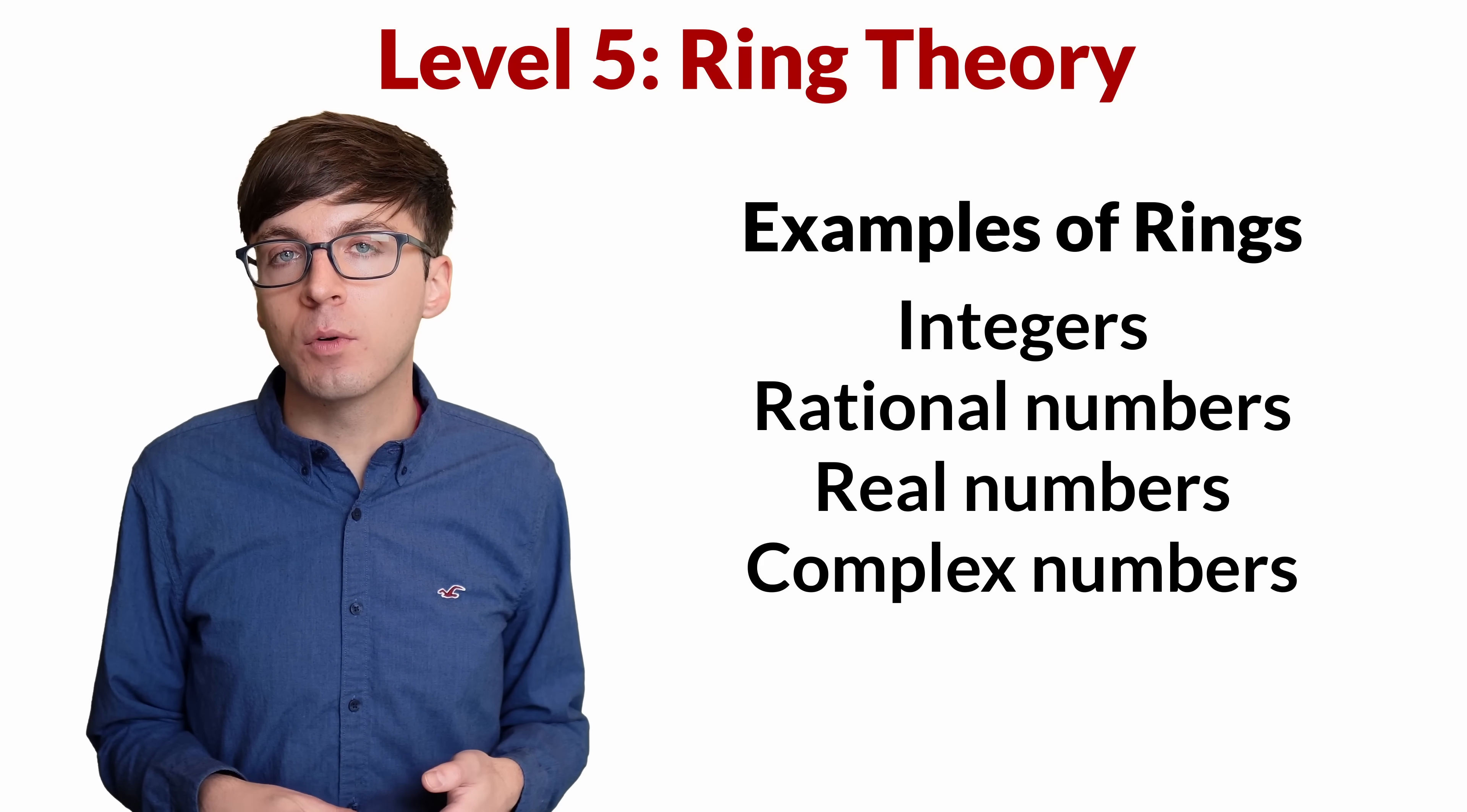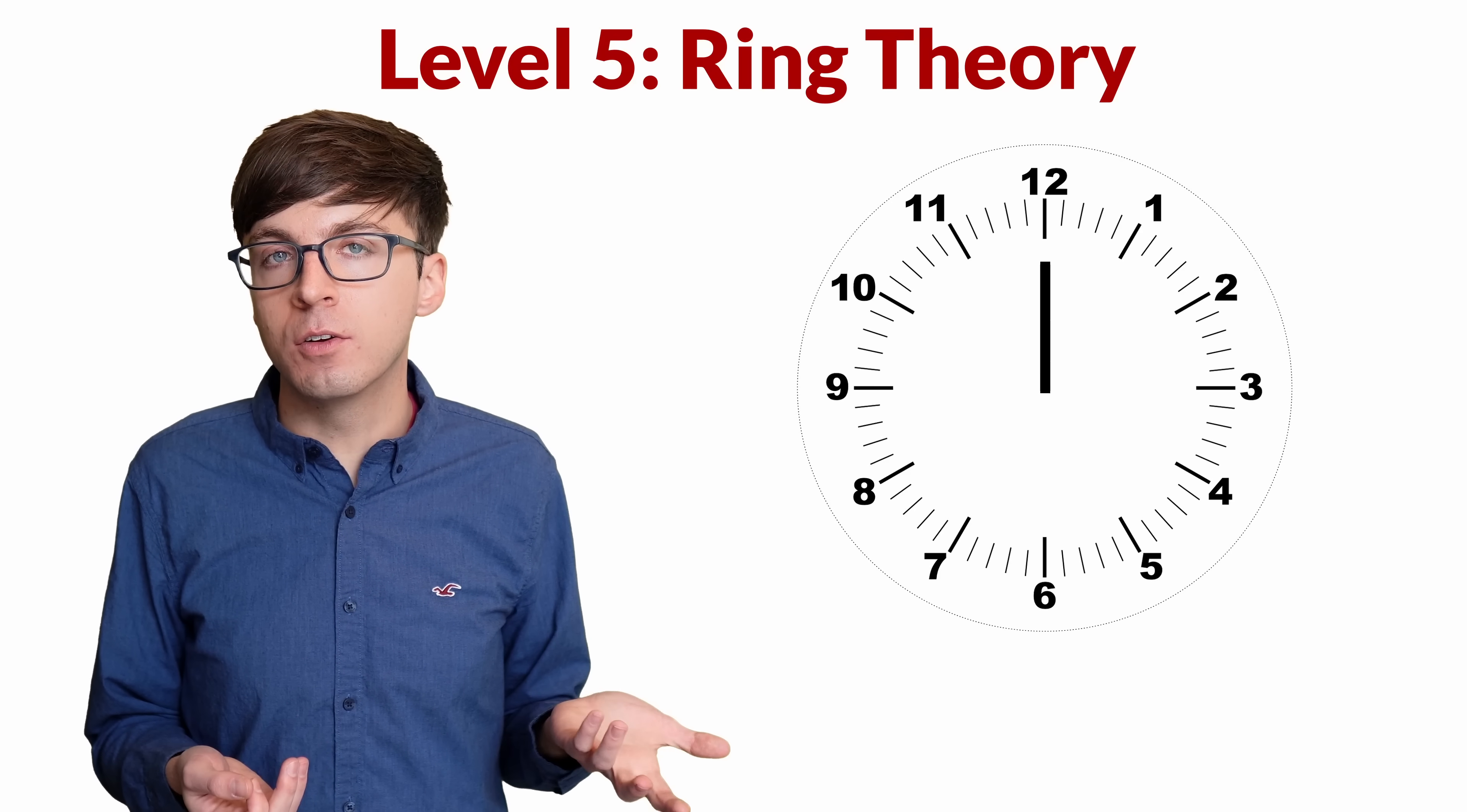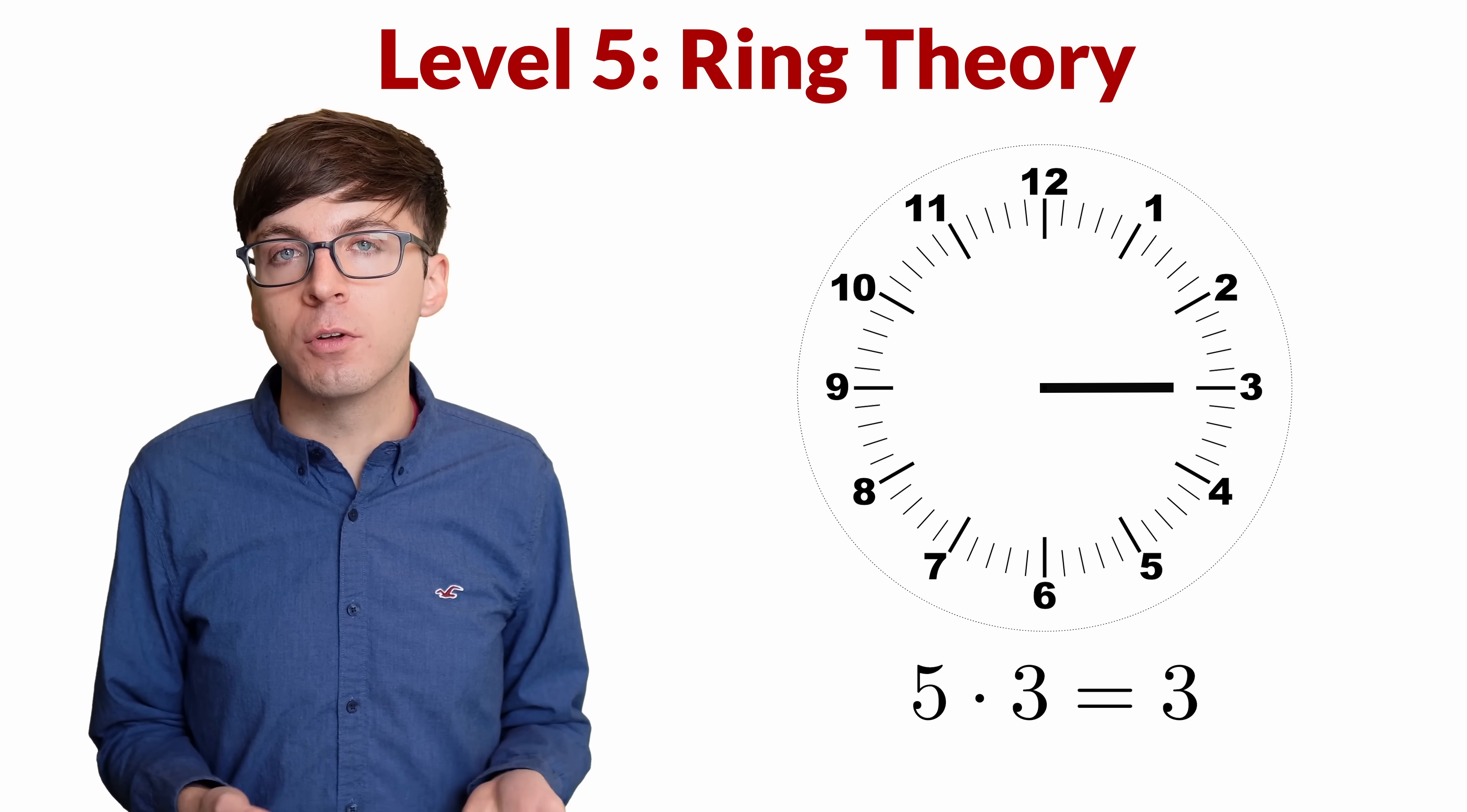Another example is 12-hour time. We can add or multiply two different hours on the clock. For example, four hours after 10 o'clock is 2 o'clock, so we can write 4 plus 10 equals 2. To multiply 5 times 3, we can start at 0, what we usually call 12 o'clock, and then we can add 5 hours three times. We get to 5 o'clock, 10 o'clock, and lastly 3 o'clock. So we can say 5 times 3 equals 3 in this ring. This is called the ring of integers modulo 12.